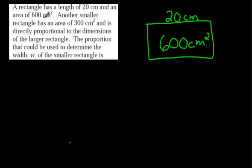Then, let's keep reading. Another smaller rectangle has an area of 300 centimeters squared. And they don't tell us anything more, except for that it is directly proportional, which means we'll be able to solve something like this using that method that we've been talking about, with two ratios equal to each other.